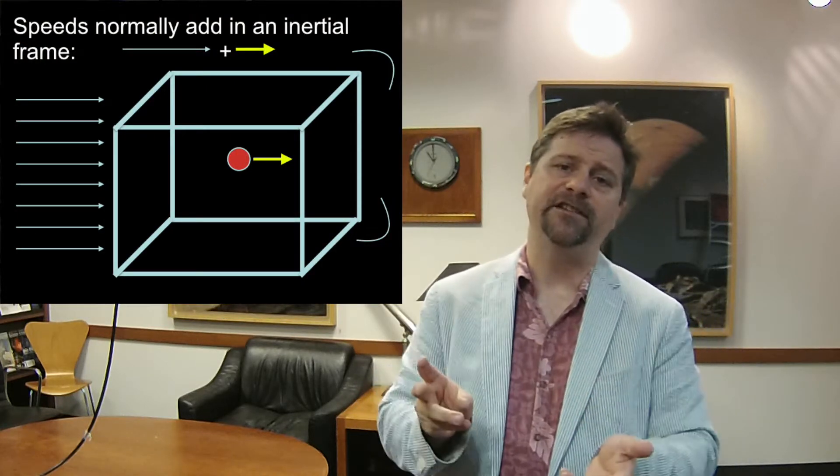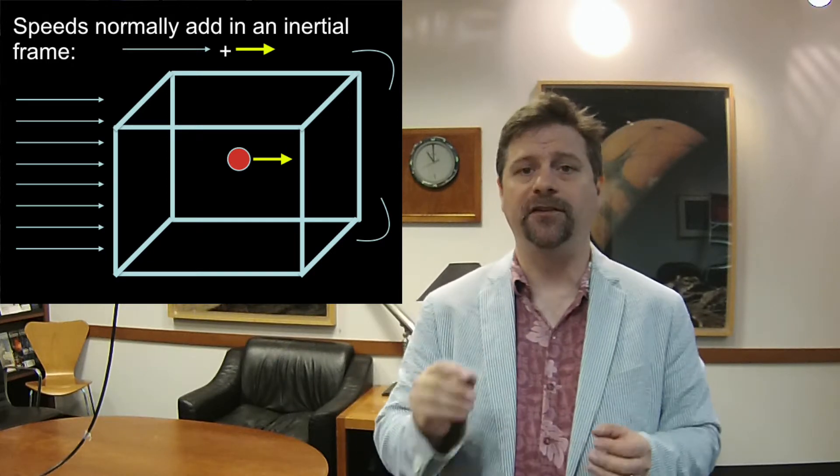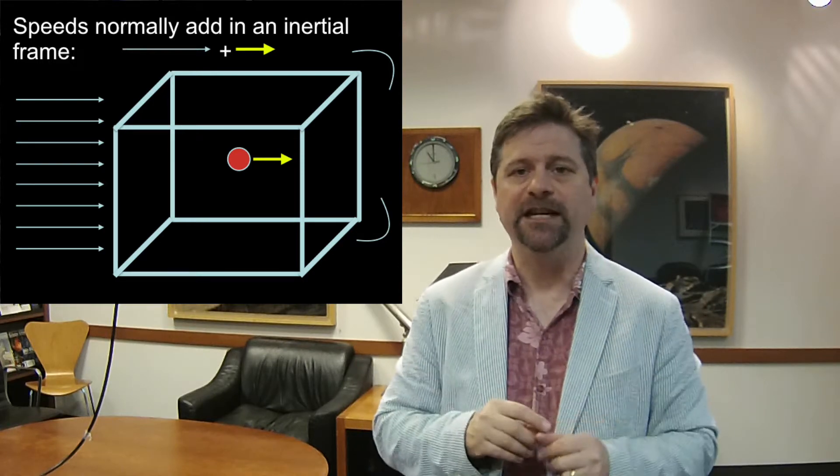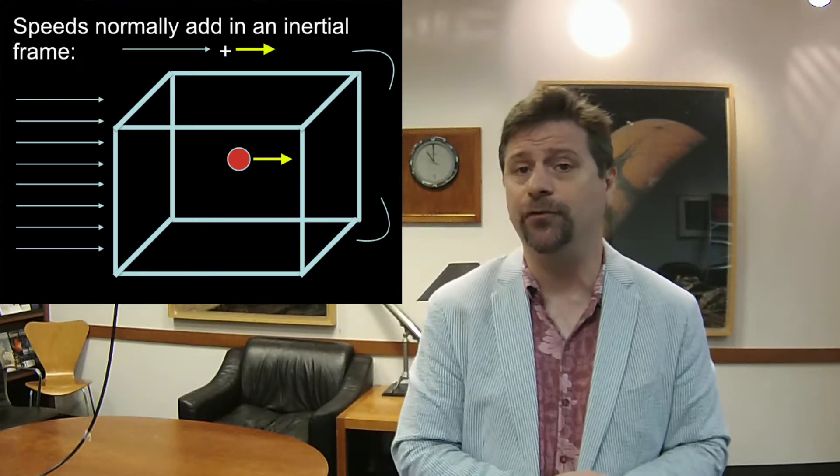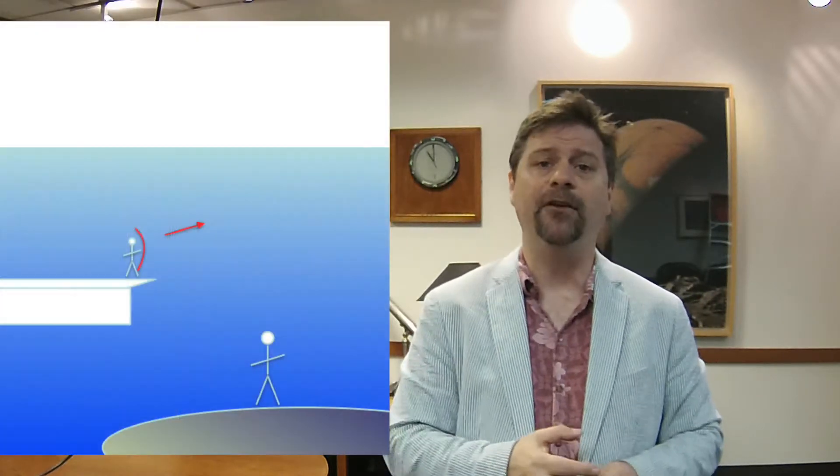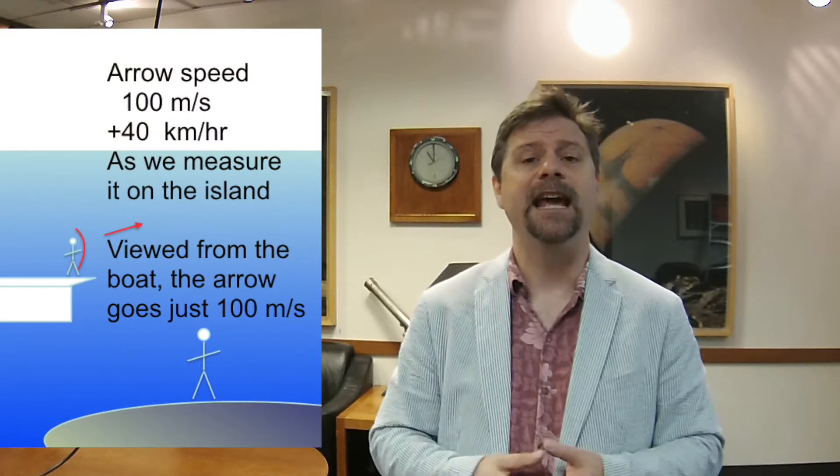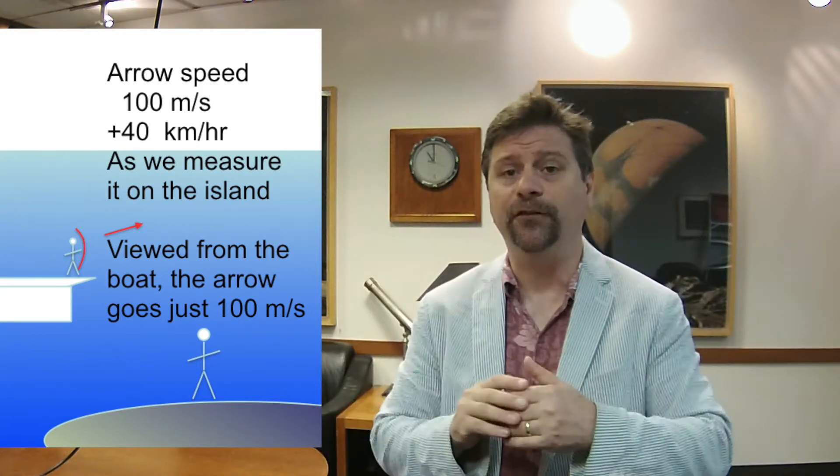Galilean relativity implied the addition of speeds, meaning one thing moving in one direction, the speed is added from one thing on top of another. You're on Galileo's great boat and you decide to shoot an arrow forward off the bow. The speed with which the arrow goes forward is the sum of the speed of the arrow launched from the bow and the speed of the ship as it's moving.